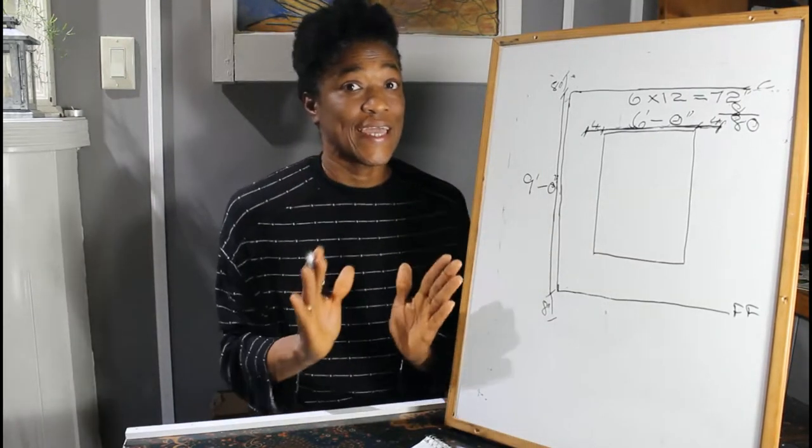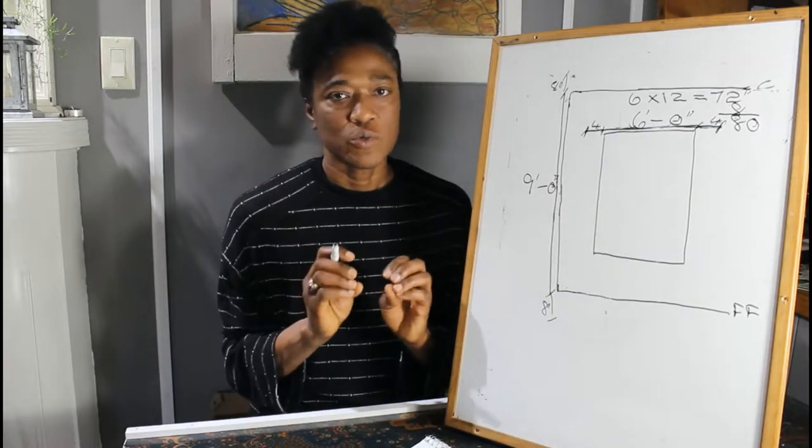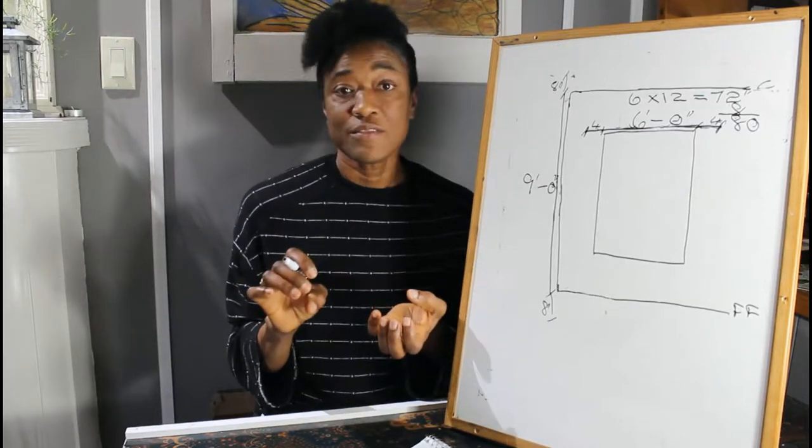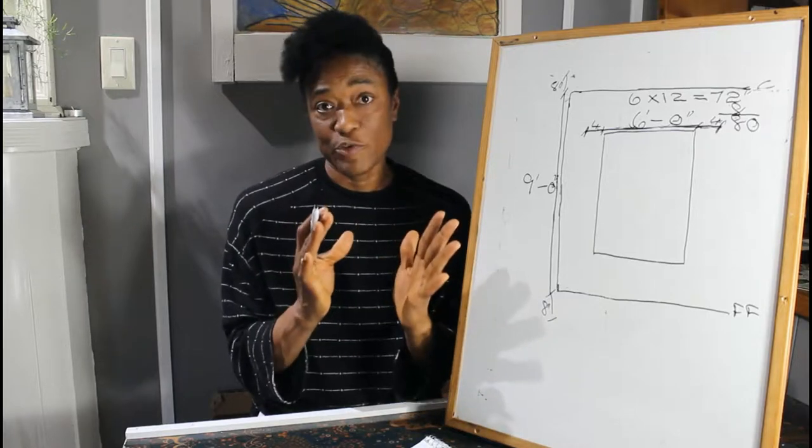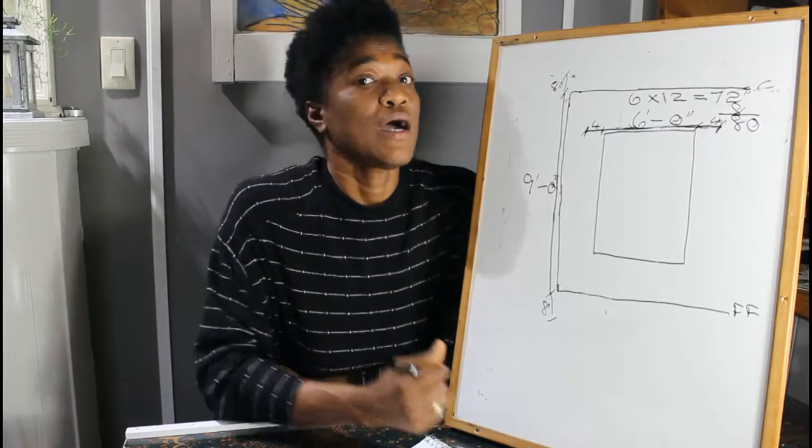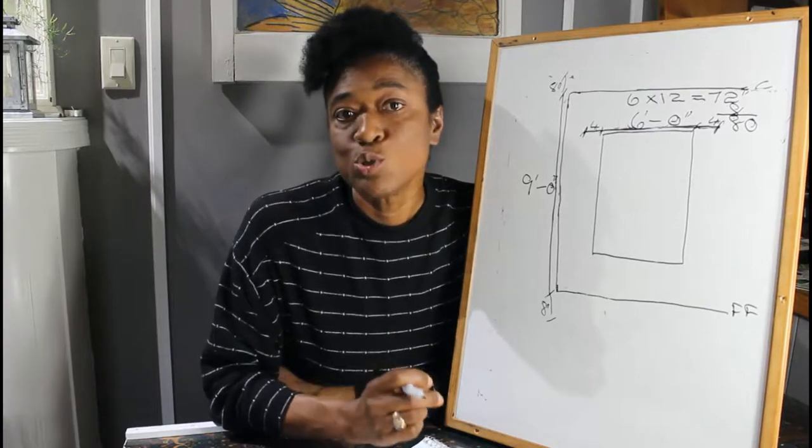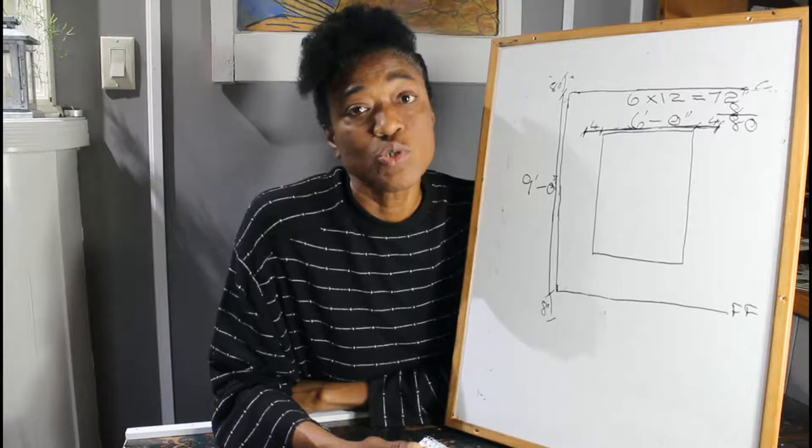So we need 80 inches of fabric to cover the window with overhang of four inches on either side. However, if we just use 80 inches, we'll just have a flat panel. We need some fullness or volume in the drape. That's the amount of pleats that you'll have. I usually recommend at least two times the width.